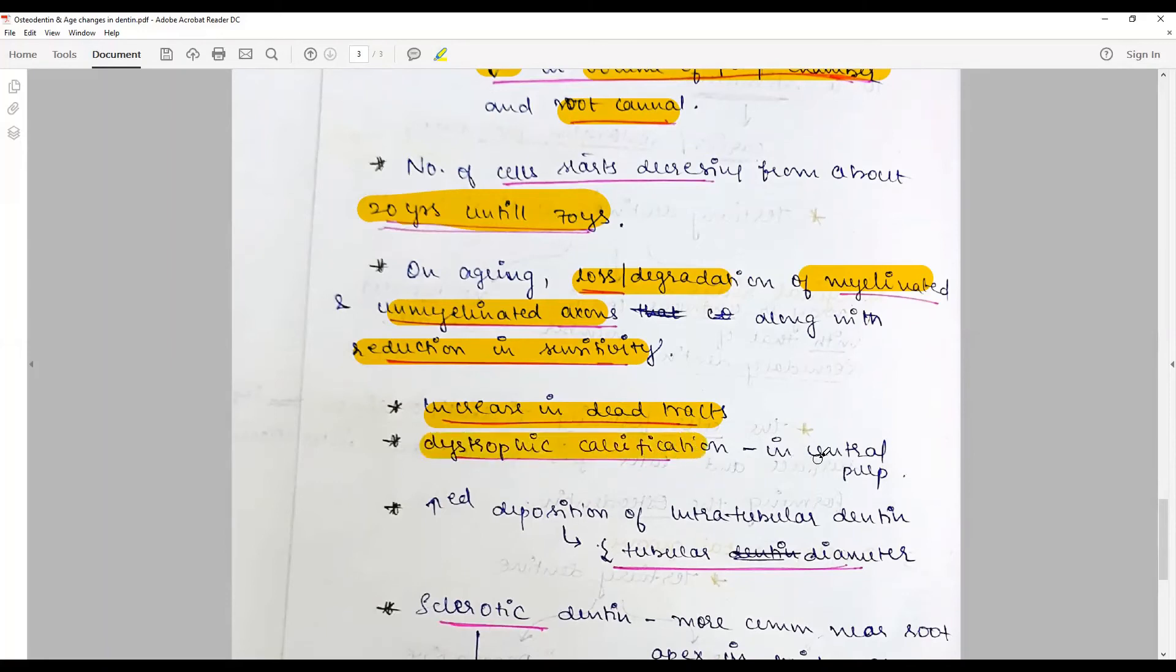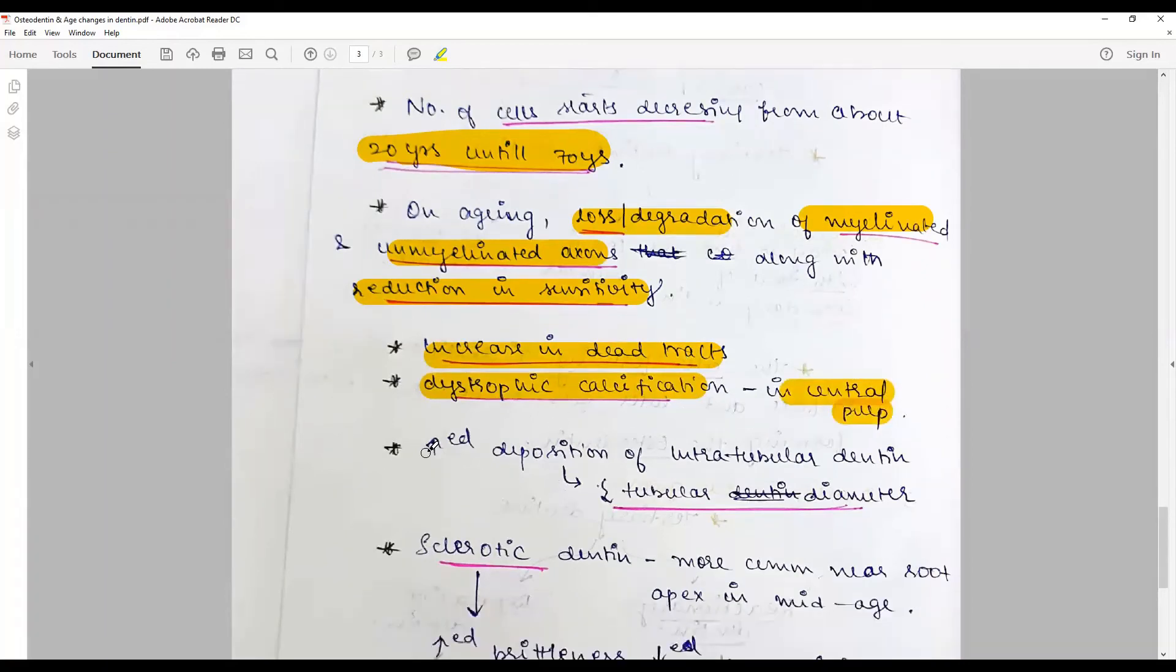There is increased deposition along the intratubular dentine leading to reduction of tubular diameter, thereby the odontoblastic process is compromised, leading to decreased sensitivity and sensing the changes in the oral cavity.